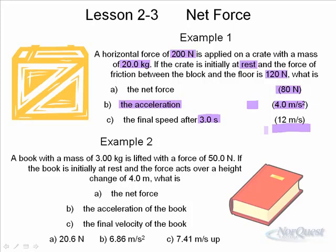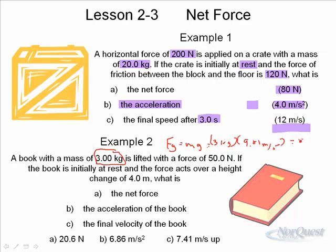The next example: a book with a mass of 3 kilograms is lifted with a force of 50 Newtons. The upward force is 50 Newtons. The downward force is found by calculating the weight of the object. The force of gravity equals mg, which is 3 kilograms times 9.81 meters per second squared, giving you 29.43 Newtons.